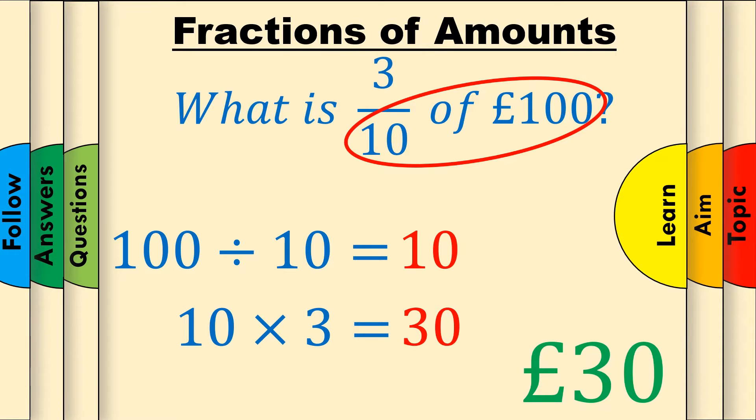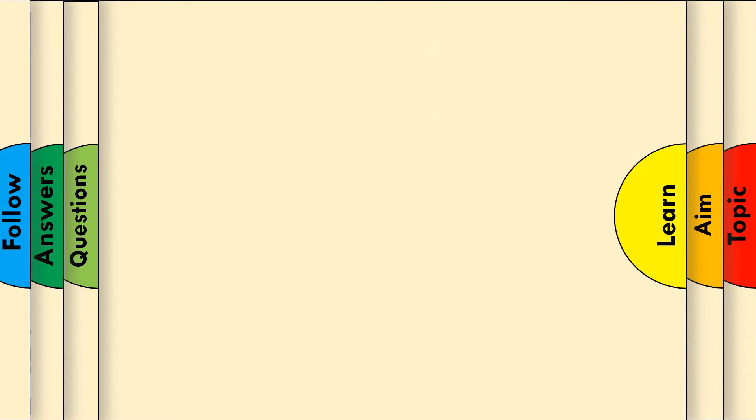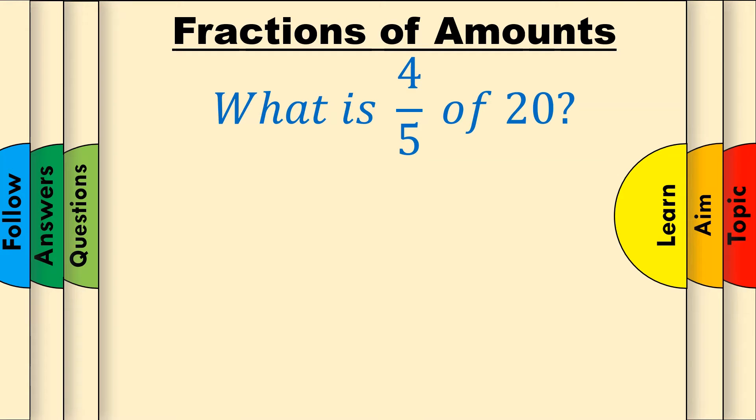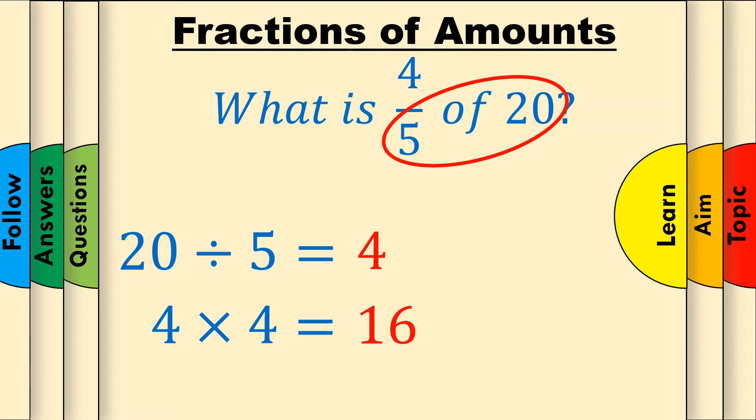Here's another example. What is 4 over 5 of 20? Like before, first divide the amount, 20, by the denominator of the fraction, 5. This gives us 4. Now, multiply this by the numerator of the fraction, which is also 4. This gives us the final answer of 16. As there are no units, we can leave it as a whole number.